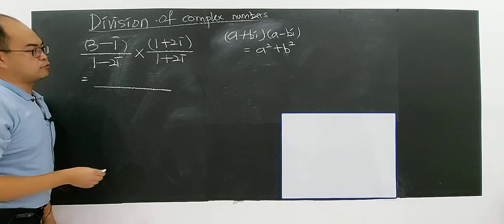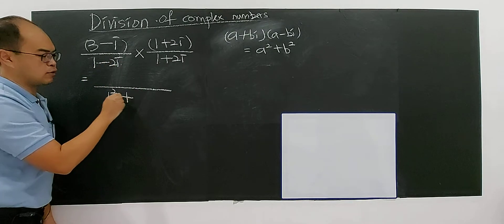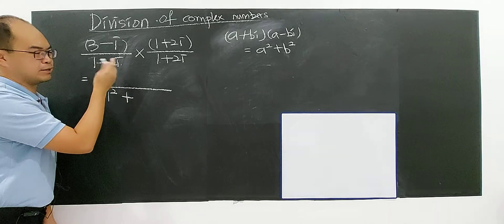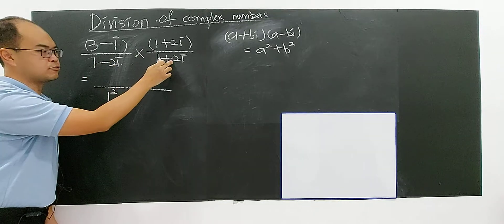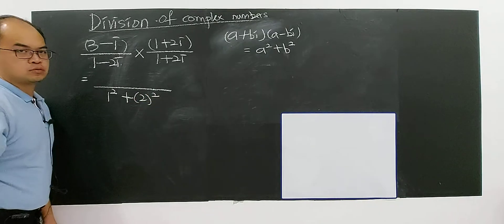Let's deal with the denominator first. So you got 1 squared, plus—always put plus here, don't care whether they're negative or positive, you just take the number here—then you have 2 to the power of 2. That's the faster way.